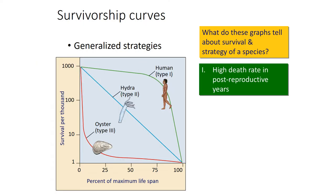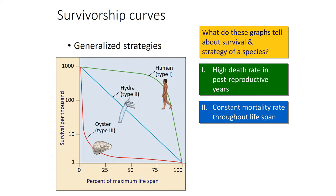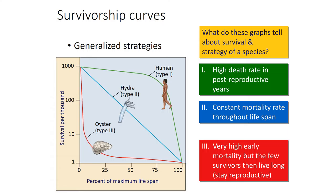In Type 1, we have a high death rate in the post-reproductive years. In Type 2, we see a constant mortality rate throughout their lifespan. In a Type 3 curve, we see very high early mortality, but the few survivors then live relatively long lives and continue to reproduce. An oyster is a Type 3 example — it produces lots of eggs at the beginning, and most of those young die off. Can you think of other species that might be Type 3 or Type 2?